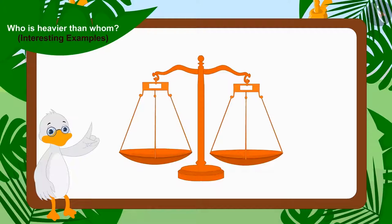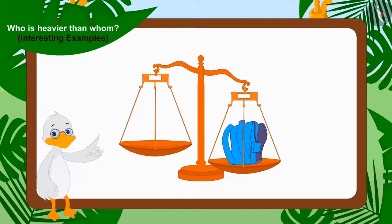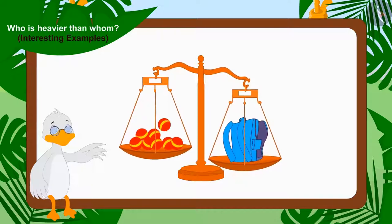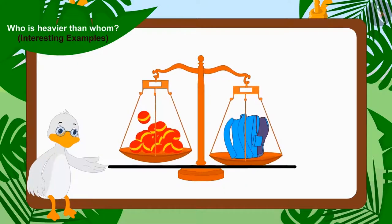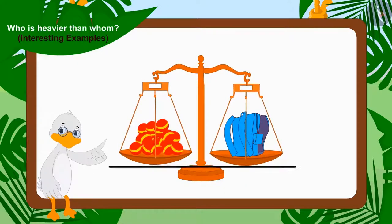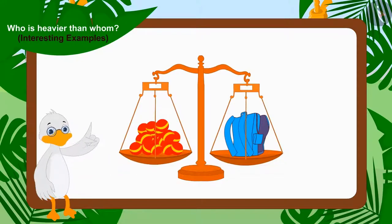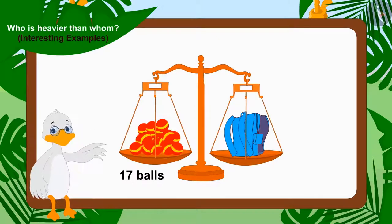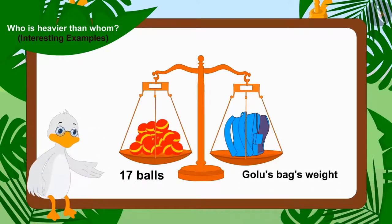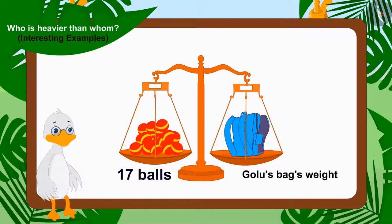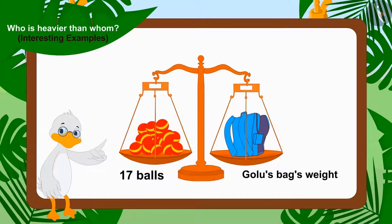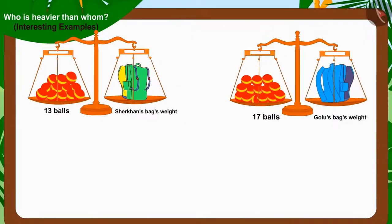Now, Uncle weighed Golu's bag with the scales. This time, when the plate came to the same level, there were seventeen balls in the plate. This means that the weight of seventeen balls equals weight of Golu's bag.